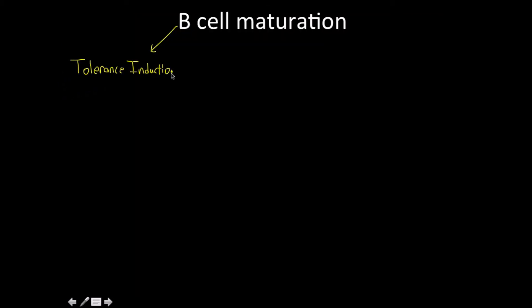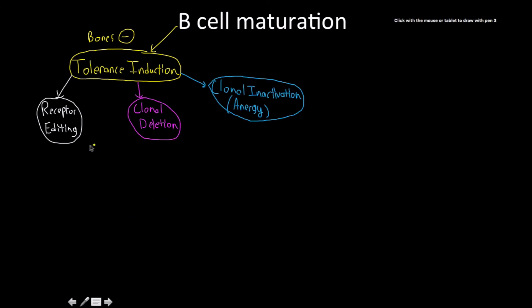Tolerance induction is happening during negative selection. We have a B-cell receptor reactive to self-antigens - a self-protein - and we don't want that. We want to make them tolerant of their neighbors, tolerant of other cells around them. The location is in the bone marrow, in the bones. This is synonymous with negative selection. The three mechanisms are receptor editing, clonal deletion, and clonal inactivation or anergy.